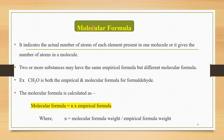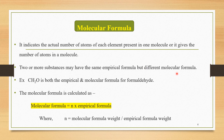The next important term is molecular formula. Molecular formula indicates the actual number of atoms of each element present in one molecule. Two or more substances may have the same empirical formula but different molecular formula. For example, CH2O is both the empirical and molecular formula for formaldehyde.